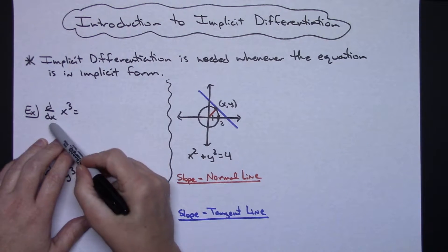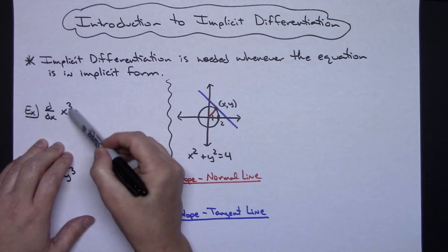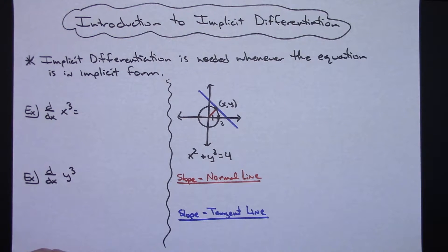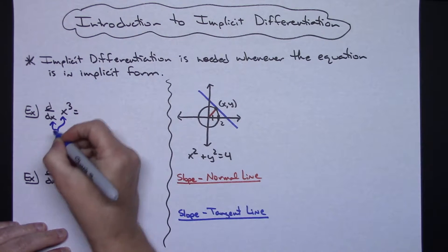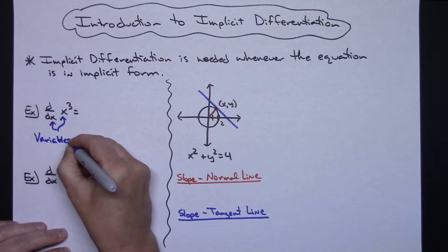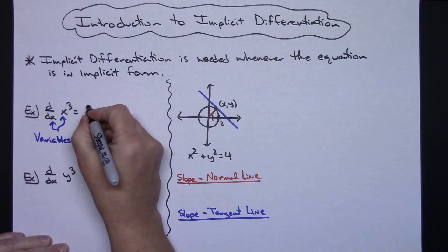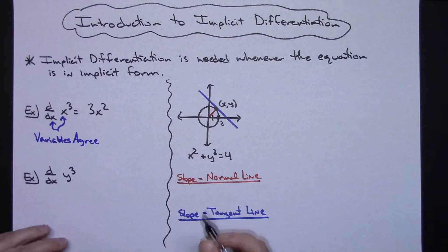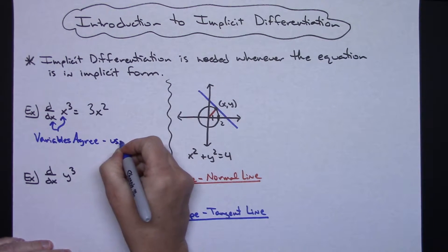So let's just say I'm taking the derivative of a plain x to the third. I am just taking the derivative of an x. In other words, my variables agree because I'm taking the derivative with respect to x. Which means that I can just go ahead and use plain ordinary power rule. So derivative here is going to be 3x squared.